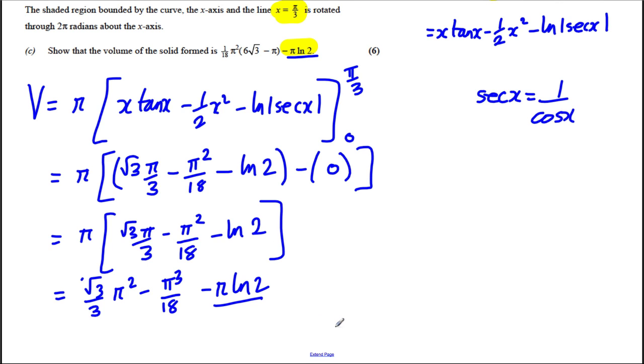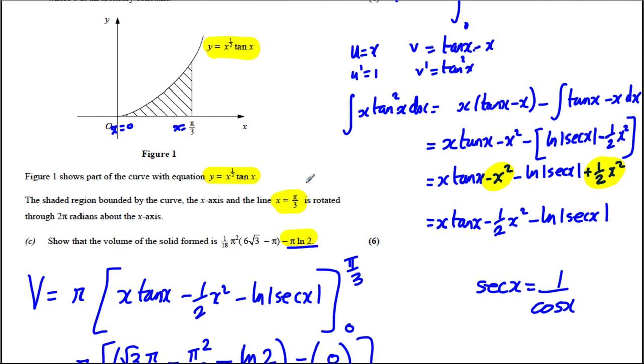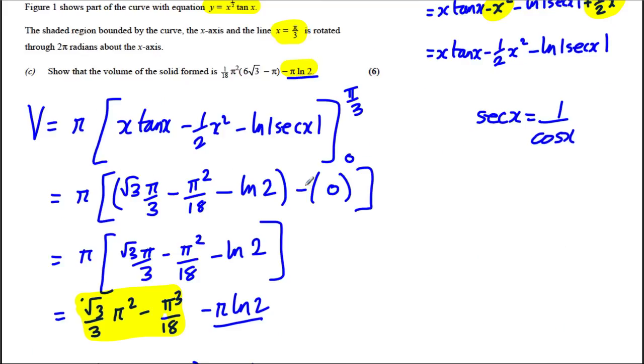What can I do next? Well, out of this section here, I could factorize, I could divide everything by pi squared and 18. So what would I have left here? There'd be no pi squared. Dividing by an 18th is the same as times in by 18. So it'd be 18 root 3 over 3, which is 6 root 3. Take away, I'd have a pi here. Subtract pi ln 2. And I think that's exactly as it has in the question it is. And so I'm done.